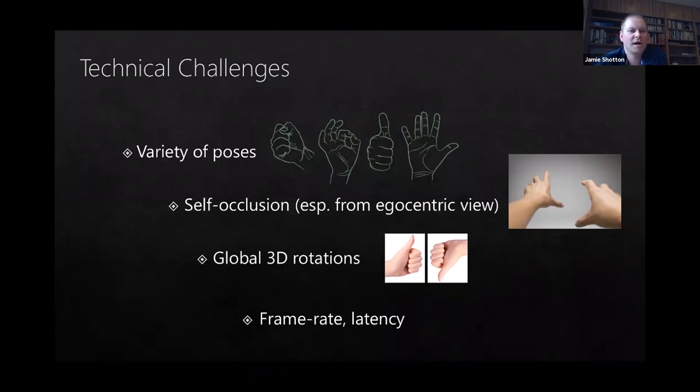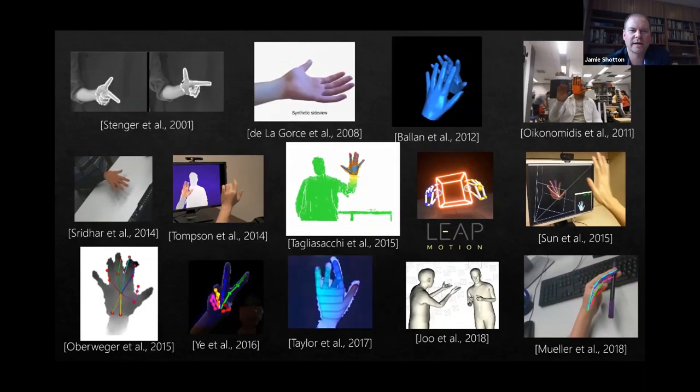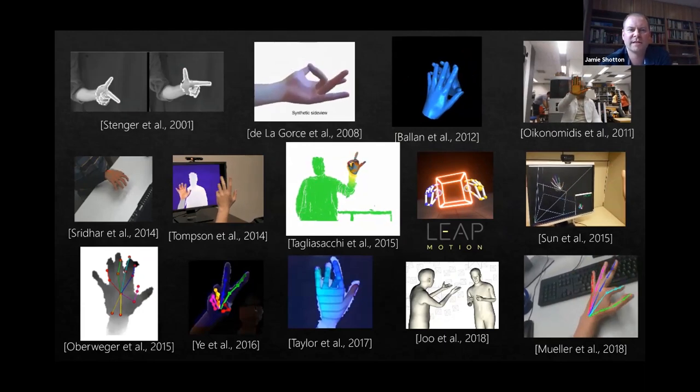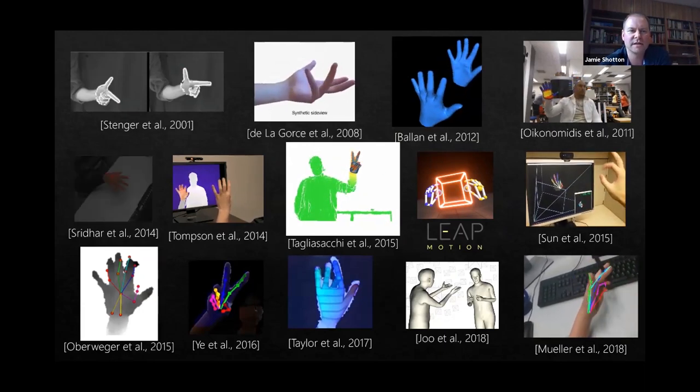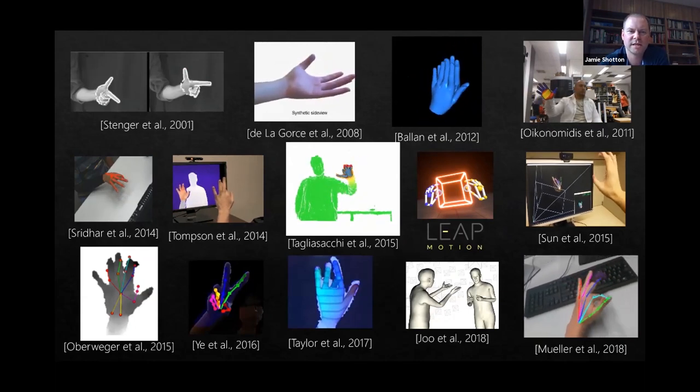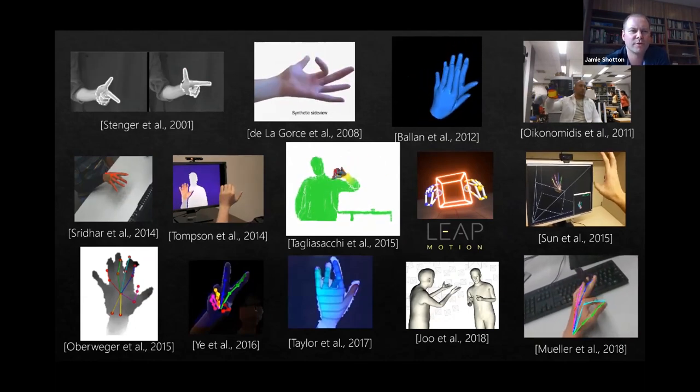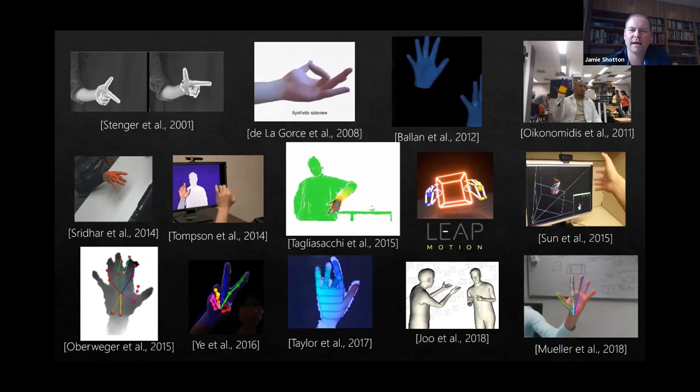Looking at this more technically, what are the challenges that we have to overcome? There's a huge variety of poses. There's a lot of self-occlusion. There's full global rotations. And you've got to worry about the frame rate and the latency of the system, given this is a live and interactive system. There's been huge progress over the last couple of decades or more in this field across the community, looking at all sorts of input from stereo, RGB, depth.